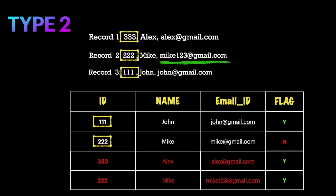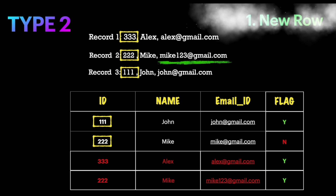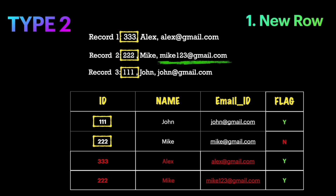To summarize: in Type 2, if a value changes for any column in the matching record, the data is inserted as a new row, whereas in Type 1 the value is overwritten. In Type 2, history is preserved in the table so we can see previous versions of the data. In short, if you want to preserve history use Type 2, and if you just want to keep the latest record use Type 1. That's the difference between Type 1 and Type 2 in data warehousing.